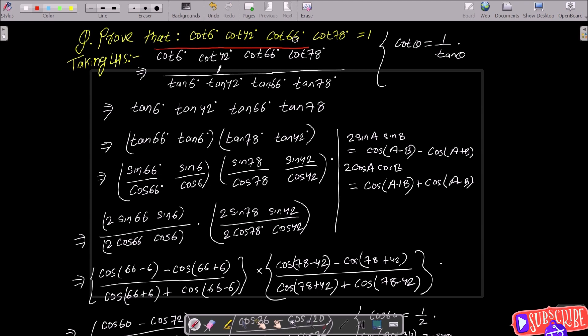Now we know cot(θ) equals 1/tan(θ), this is the formula. So I have written 1 divided by tan. In place of cot(6°) we can write 1/tan(6°), for 42° we can write 1/tan(42°), cot(66°) becomes 1/tan(66°), and cot(78°) becomes 1/tan(78°).